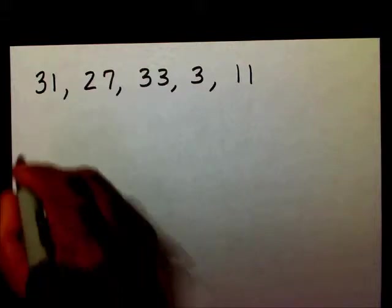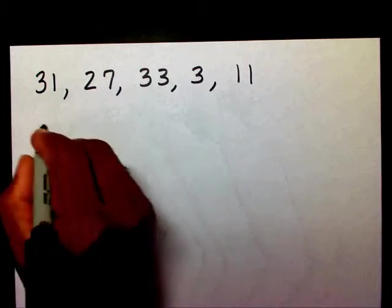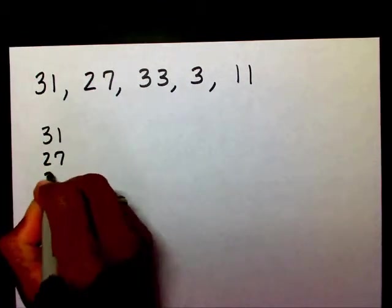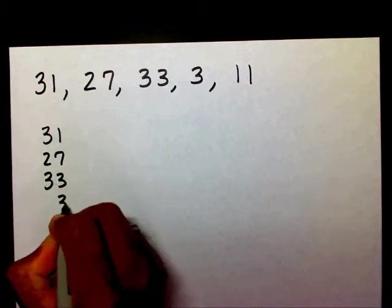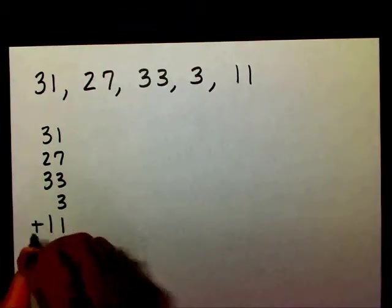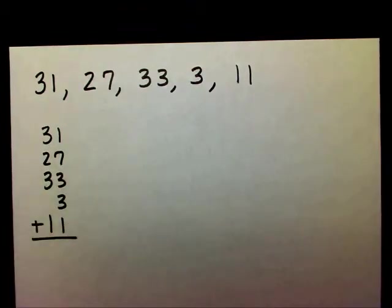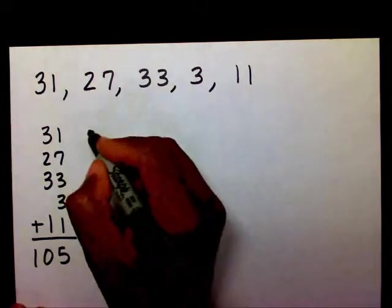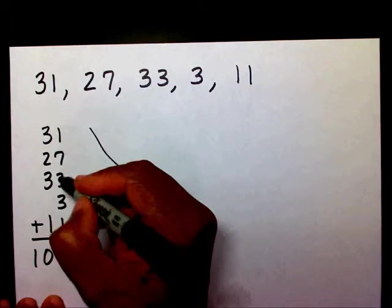So the first thing we want to do is add all of our numbers. We have 31, 27, 33, 3, and 11. So when I add 31 plus 27 plus 33 plus 3 plus 11, I'm going to get 105. Well, how many numbers do I have? Well, again, I have 1, 2, 3, 4, 5 numbers.